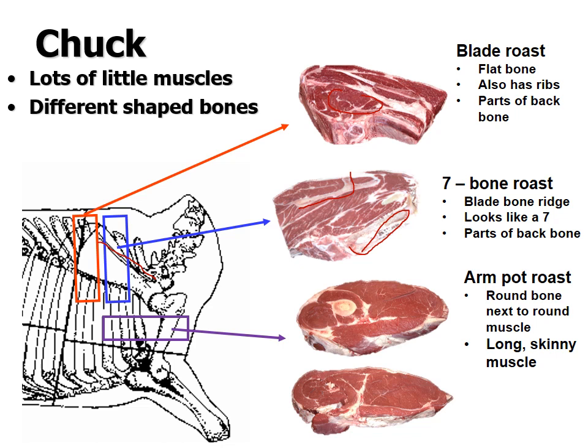If you move on down, they'll turn the chuck and cut it in a different direction to get the arm pot roast — that's where you have the round bone next to the round muscle, telling you you're in the front end of the chuck. You'll also see a long skinny muscle that sits right next to it. The arm roast can be bone-in or boneless, but you can still see that round muscle and lots of little muscles confirming it's an arm pot roast.